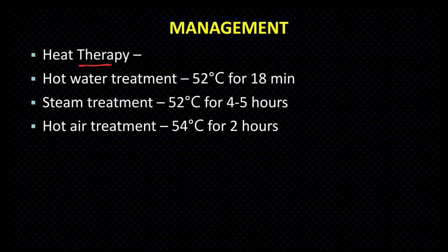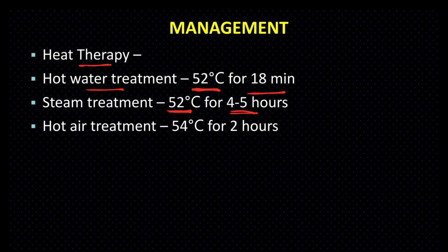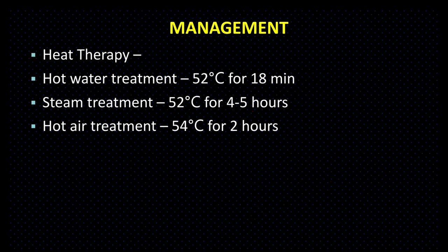Heat therapy: जो planting material है उसे 3 तरह से treat कर सकते हैं — Hot water treatment: 52 degree centigrade के water में 18 minutes तक dip करके रखें। Steam treatment: 52 degree centigrade की steam में 4 से 5 घंटे तक रखें। Hot air treatment: 54 degree centigrade hot air में 2 घंटे तक रखें। इससे cane के अंदर का pathogen मर जाएगा।